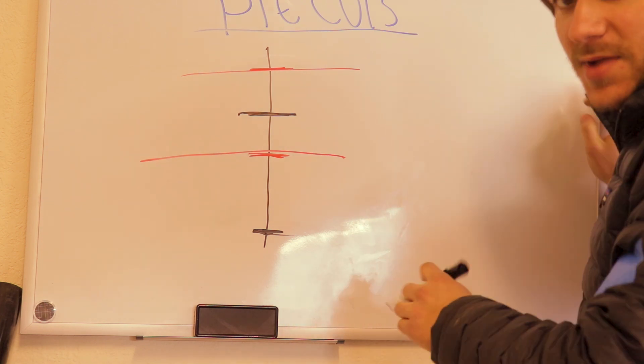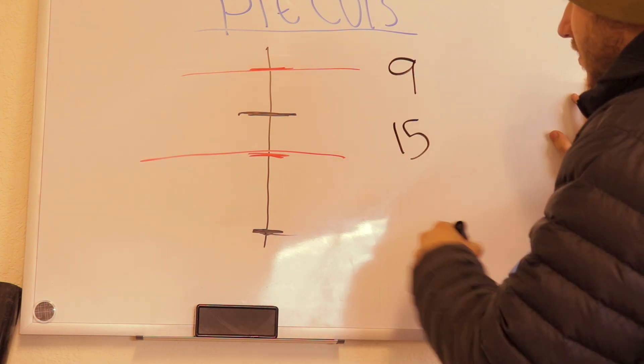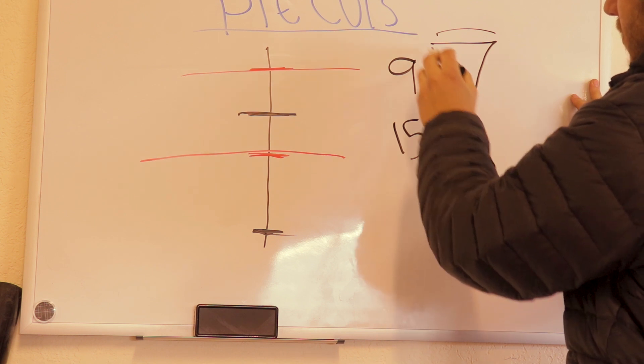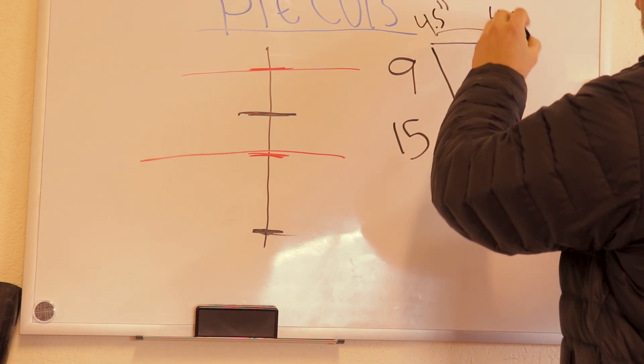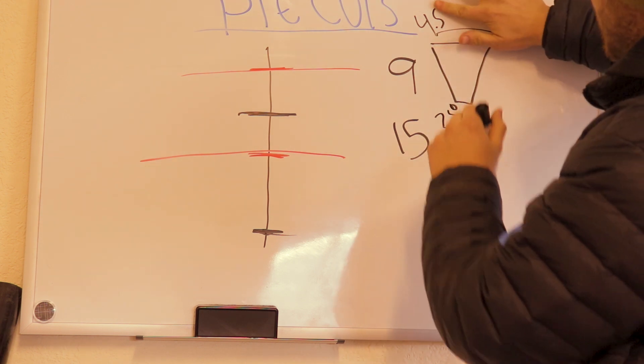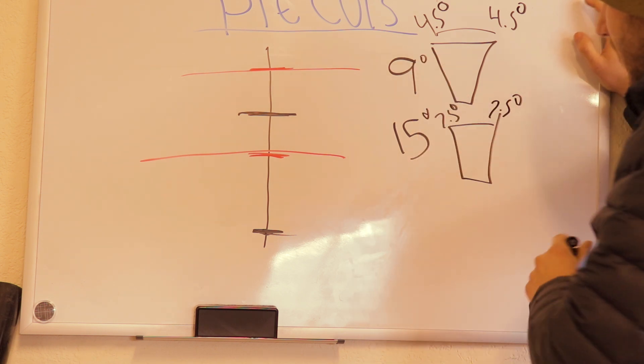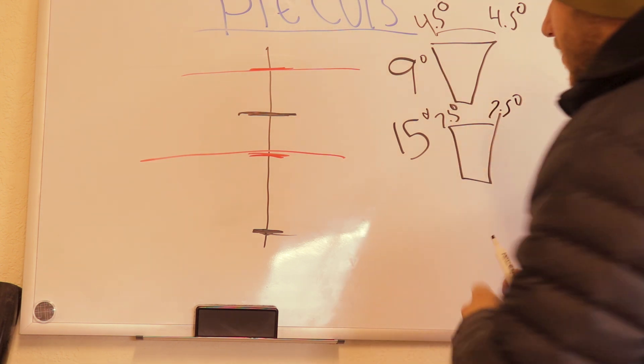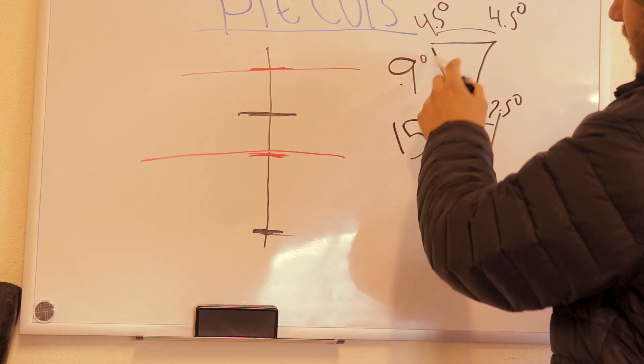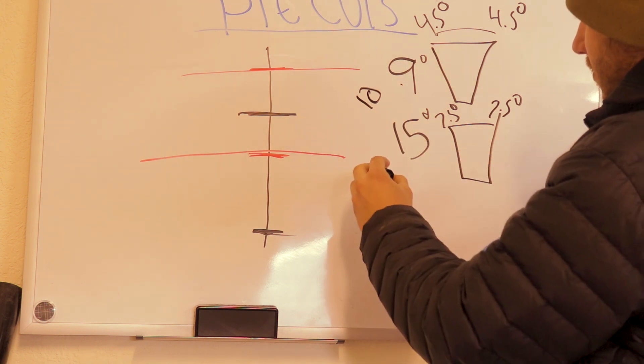Now most pie cuts are either at nine degrees or 15 degrees. And what that is, is let's say you have your pie cut. It's nine degrees total. So you have four and a half degrees here and four and a half degrees here. On 15, you'd have seven and a half degrees. So you'd have seven and a half degrees on both sides. And the reason why people use these a lot is mathematically it's super easy. So for a 90 degree bend with your nine degree pie cuts, you would need 10 of them. And with your 15 degree pie cuts, you would only need six of them.